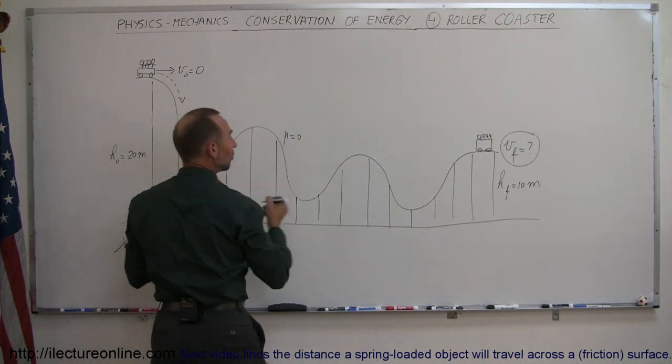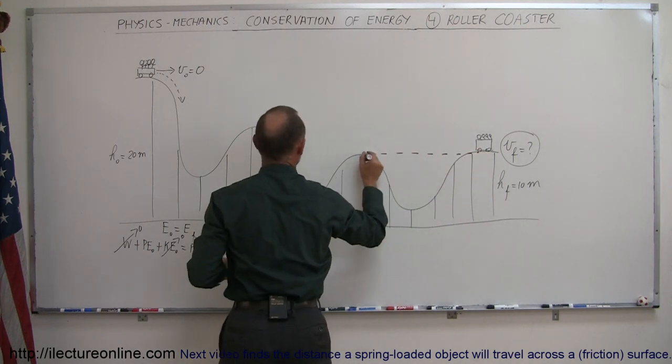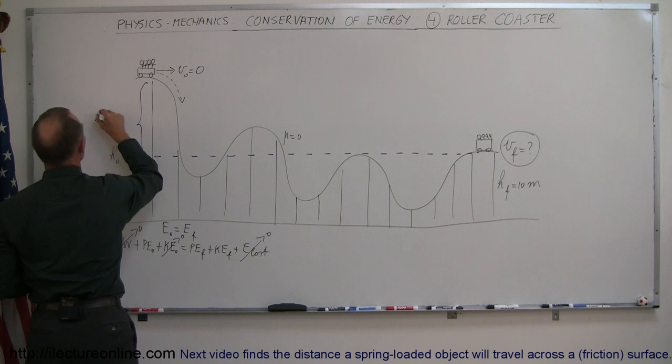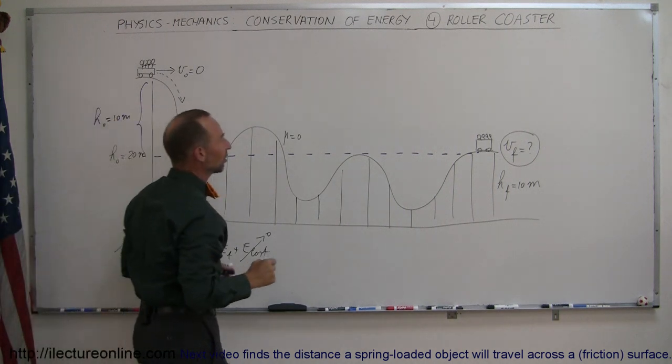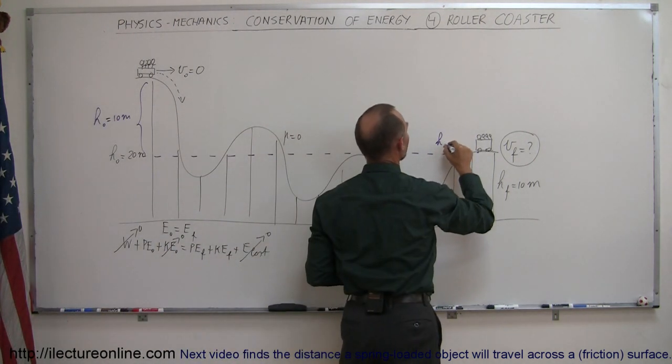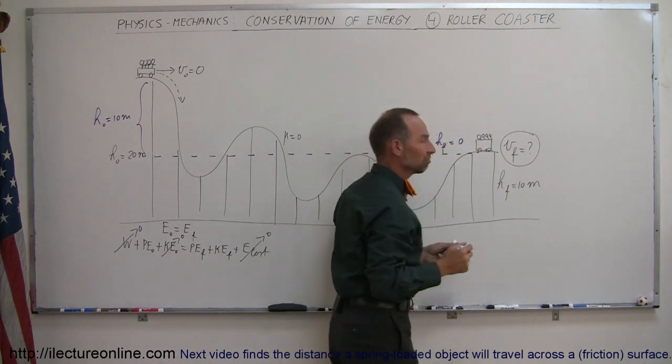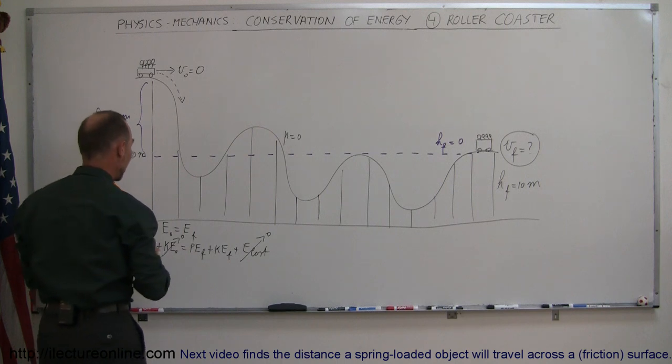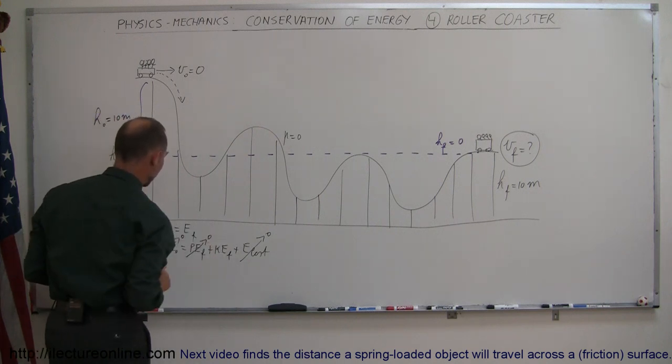So if I call this the reference height, then I can say that the initial height h initial is equal to 10 meters and I can say that h final is equal to 0 meters. I don't have to do that but it just makes the equation a little bit easier. So I can say that we have zero final potential energy.